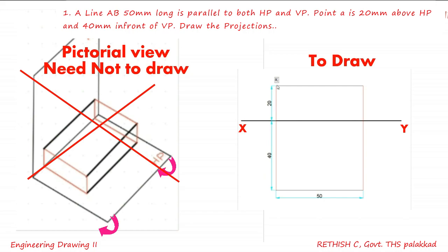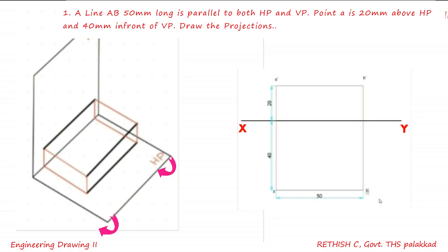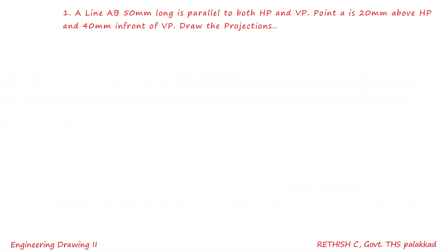Name the front view as A' and B'. For the top view, use small letters: a and b. This is our answer. You only need to draw the XY line, front view, and top view. The pictorial view is for reference only. We can go to the second example.